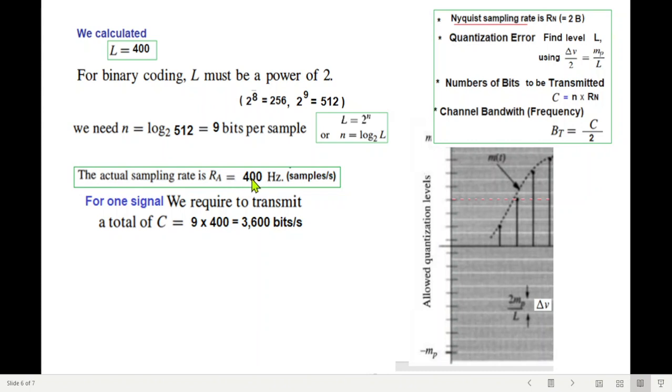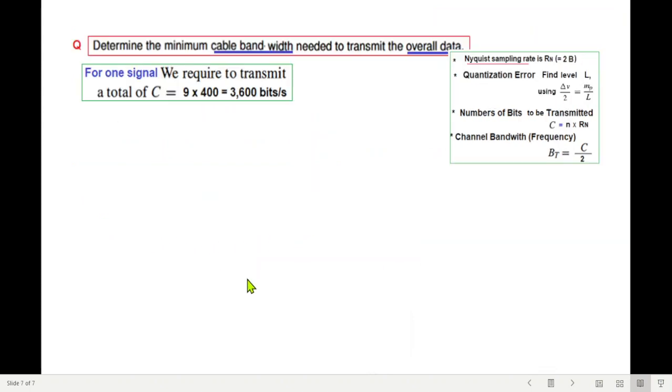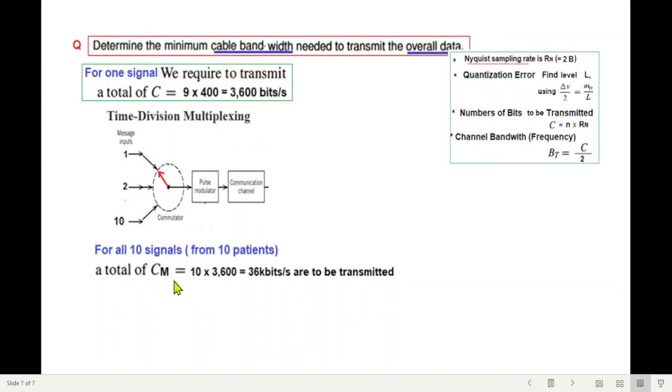Now the actual sampling rate we calculated was 400 hertz or 400 samples per second. For one signal we require to transmit a total of 400, and for each sample we need 9 bits, so 400 multiplied by 9 is 3600 bits per second. This is for one signal. The question says determine the minimum cable bandwidth needed to transmit the overall data. Overall data means all the 10 data, so 10 signals will be requiring 10 times of that. The total CM is equal to 10 into 3600, which is 36 kilobits per second to be transmitted.